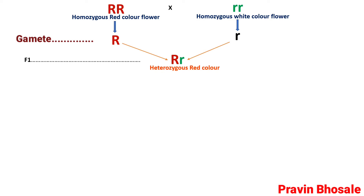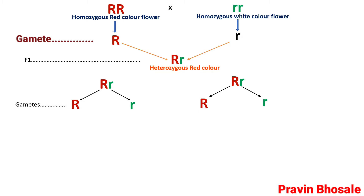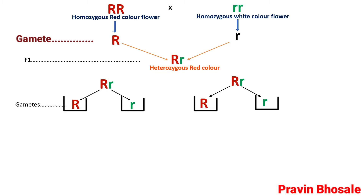So here, the alleles come together and remain together. Capital R and small r are two different alleles — they come together and remain together. When we go for selfing (inbreeding), the results of F1 generation are self-crossed. Gametes formed are capital R, small r, capital R, small r. So in gamete formation, the alleles get separated. As per the law, on crossing a pair of contrasting characters, the factors come together and remain together, but separate during gamete formation — capital R in one gamete, small r in another gamete.